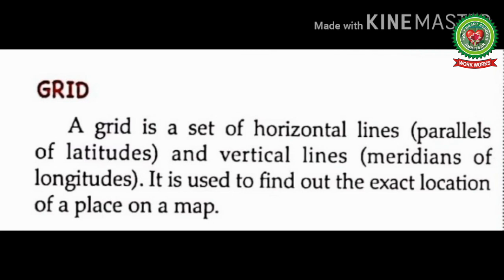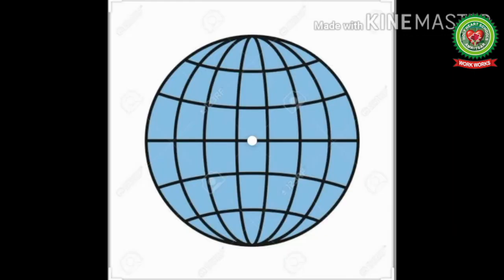Now students, open page number 18 of your book. First we will discuss grid. Grid means network of latitudes and longitudes. You can see the picture of globe in which latitudes and longitudes are drawn. These latitudes and longitudes make the grid.